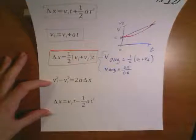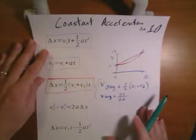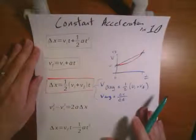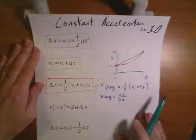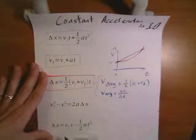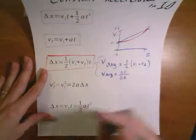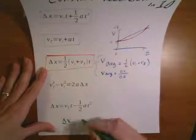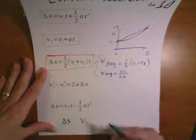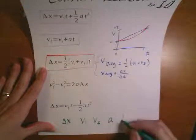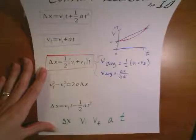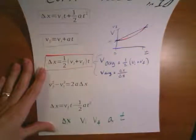These equations can help us solve pretty much any problem in constant acceleration in 1D motion. Each one of these has four variables in them. In total, we can look at the displacement, the initial velocity, the final velocity, the acceleration, and the time. If you have three of these variables, one of these equations will help you find the fourth and fifth ones that you don't know.